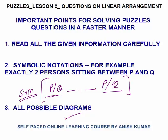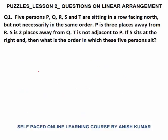Let's start with the questions. Question number one: five persons P, Q, R, S, T are sitting in a row facing north. You can assume this direction is north — this direction should not be confused. Not necessarily in the same order.